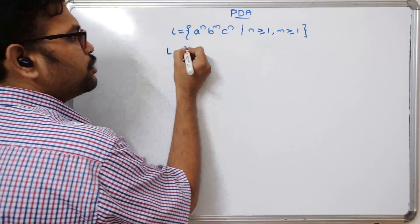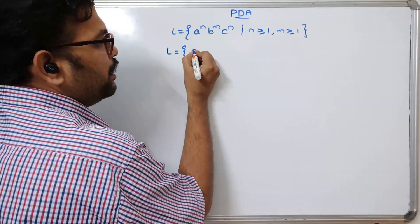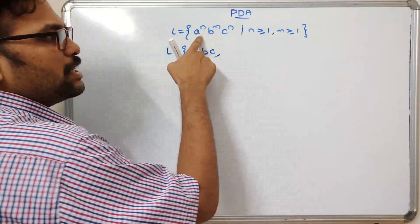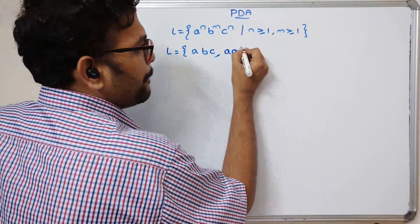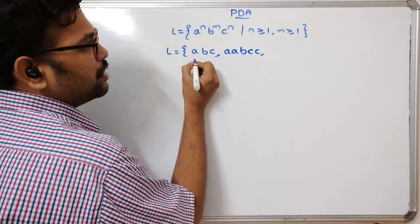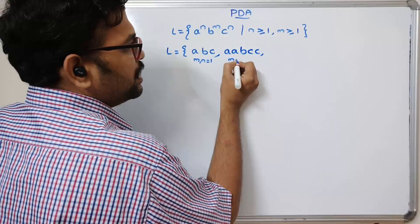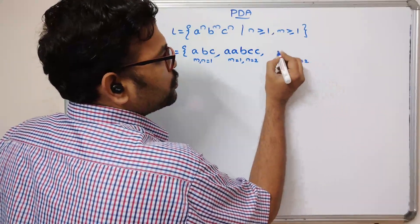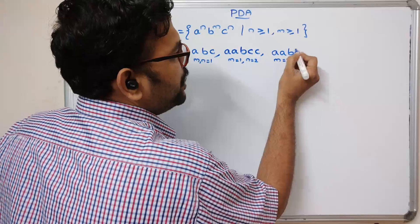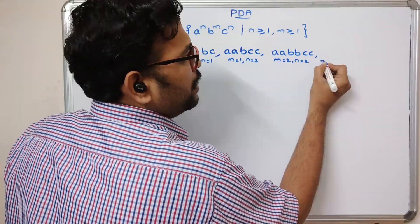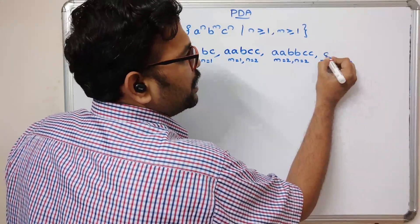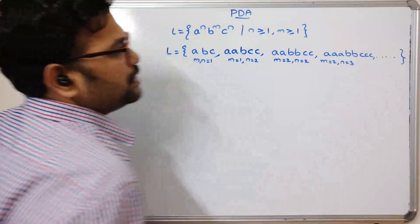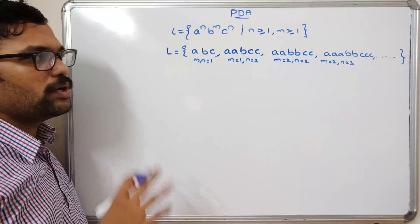If n=1 and m=1, the string is 'abc'. If n=2 and m=1, it is 'aabcc'. If m=2 and n=2, we get 'aabbcc'. If m=2 and n=3, we get three a's followed by two b's followed by three c's, and so on. These are the acceptable strings for the given language, and now we have to construct the PDA.